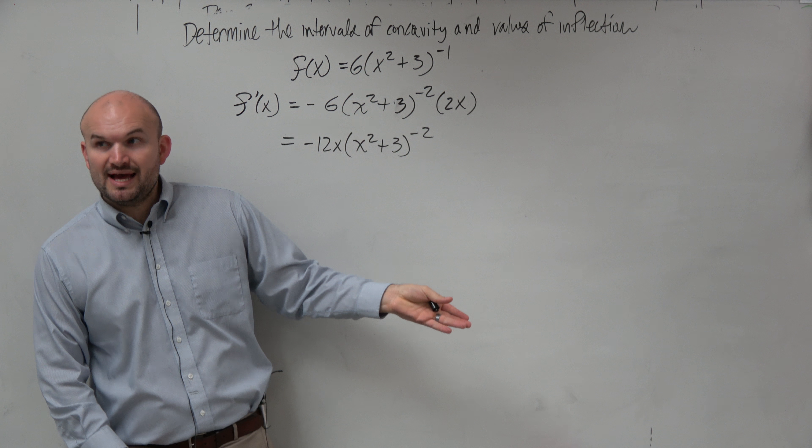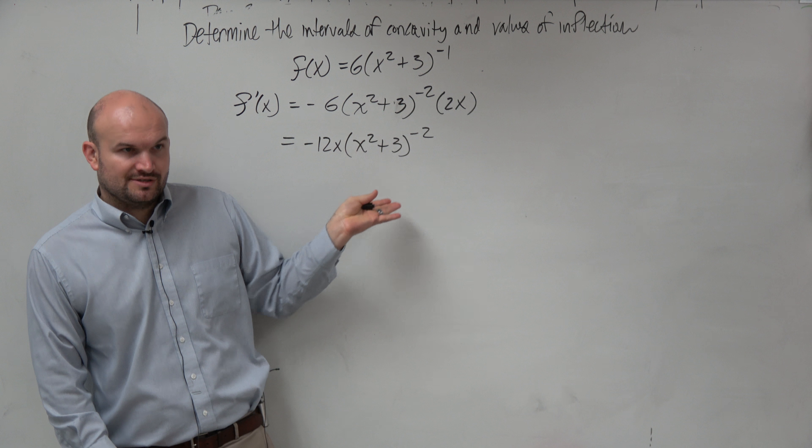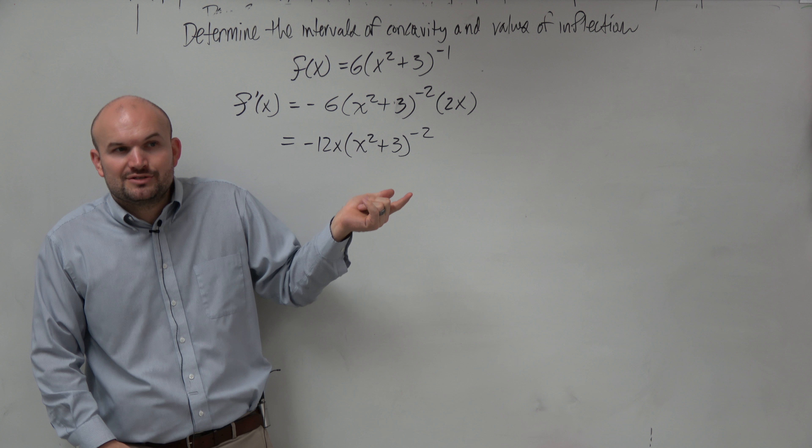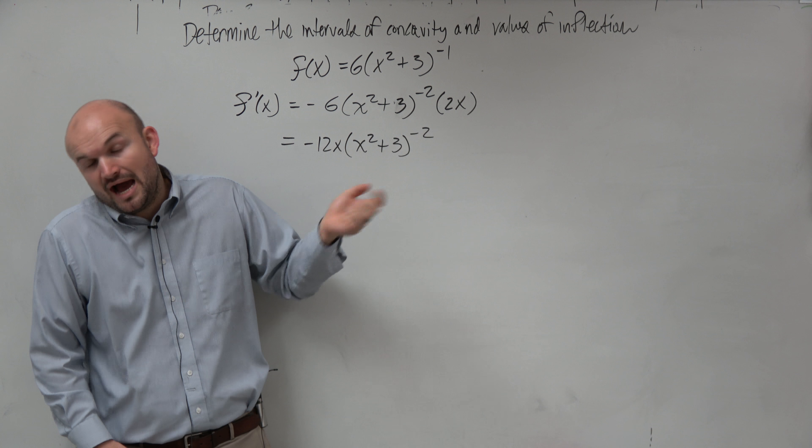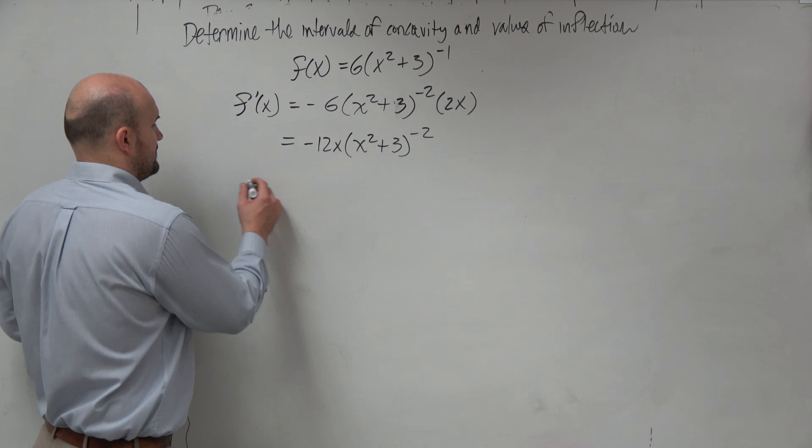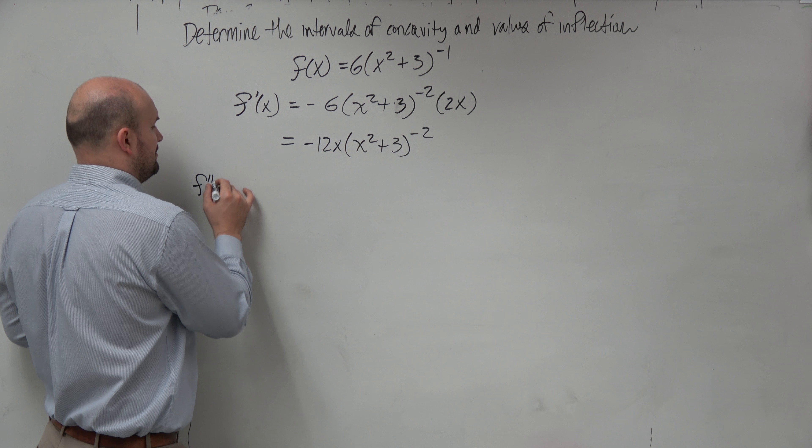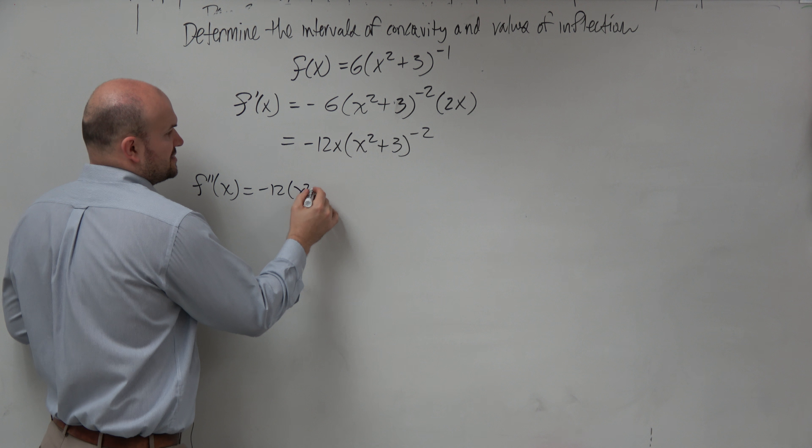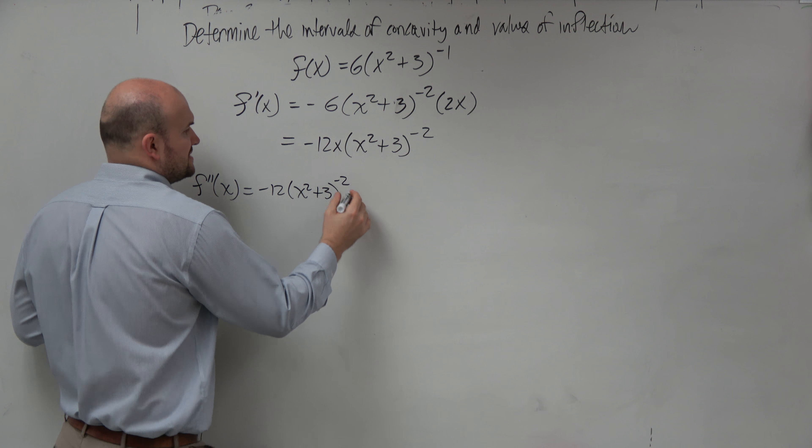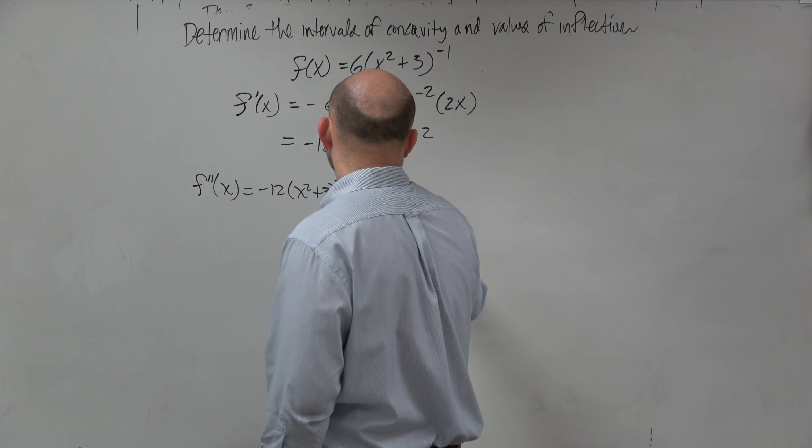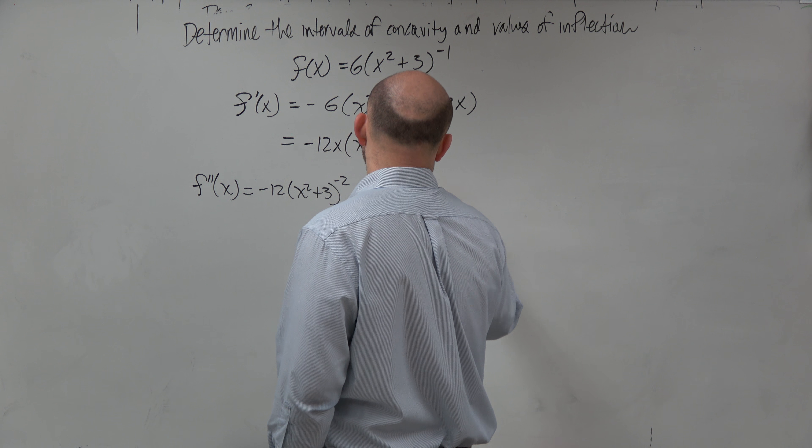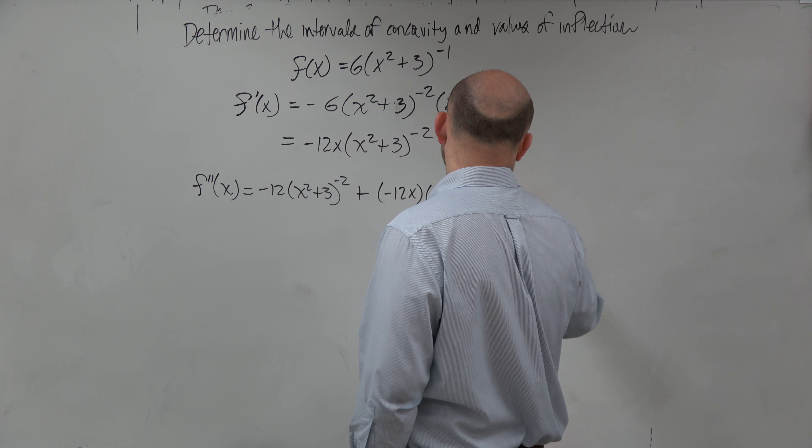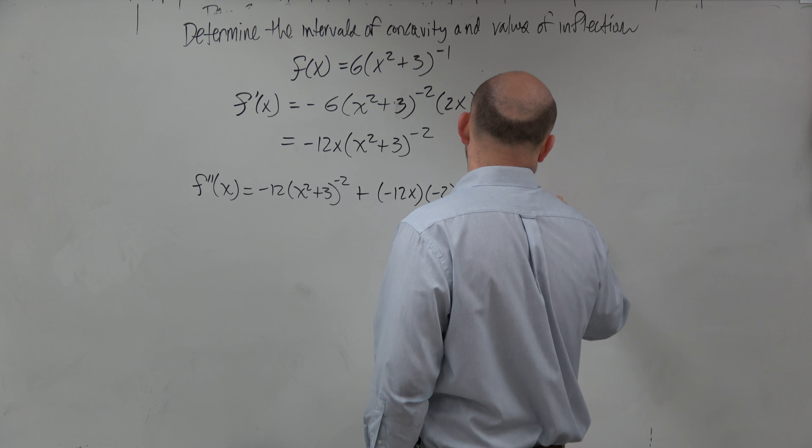But now we have to do the derivative again. I could rewrite this and do the quotient rule, but I can say I have a product, so why don't I just use the product rule? I would prefer the product rule over the quotient rule. So I do f double prime. The derivative of the first is going to be negative 12 times x squared plus 3 to the negative 2, plus negative 12x times negative 2 times x squared plus 3 to the negative 3rd, times 2x.